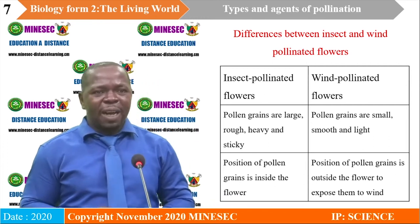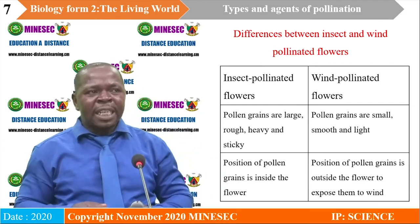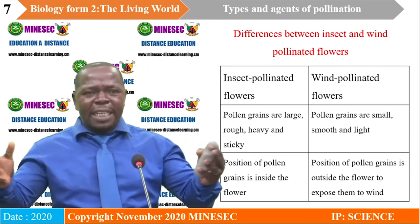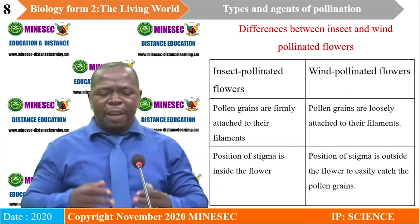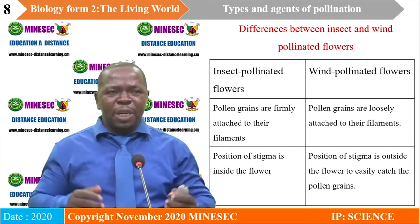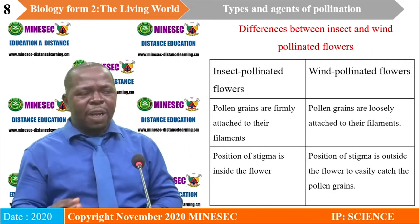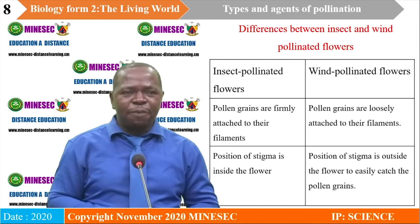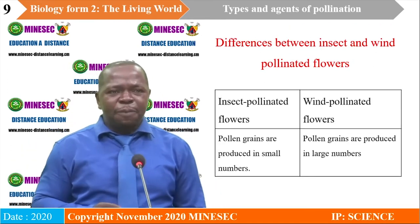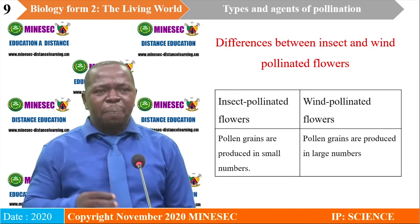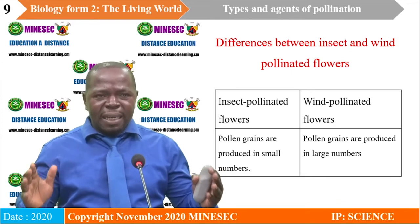In insect-pollinated flowers, the position of the petals is inside the flowers, while in wind-pollinated flowers, the position of the petals is outside the flowers. In insect-pollinated flowers, the pollen grains are firmly attached to their filaments, while in wind-pollinated flowers, pollen grains are loosely attached to their filaments. The position of the stigma in insect-pollinated flowers is inside the flower, while in wind-pollinated flowers the stigma is outside the flower. Finally, pollen grains in insect-pollinated flowers are produced in small amounts, while in wind-pollinated flowers pollen grains are produced in large amounts.